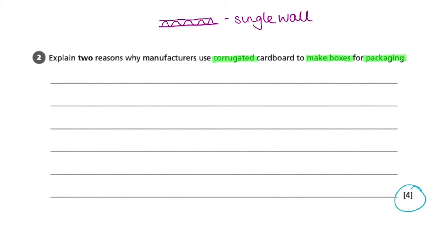This first picture shows a single wall corrugated cardboard, whilst this second diagram shows a double wall. I know that the interlacing fluted inner section adds strength without increasing the weight of the cardboard significantly.